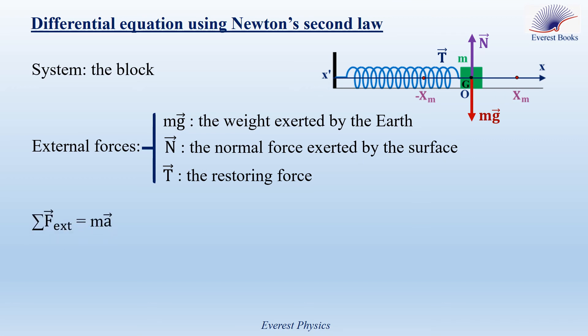Now, applying Newton's second law, the sum of the external forces acting on the block is equal to its mass times its acceleration. Replace the sum of the external forces by M g plus N plus T. Project these vectors along the x-axis. The projection of the weight is zero, since the weight is normal to the x-axis. Similarly, for that of the normal reaction, and the projection of the restoring force is equal to minus K x. So, minus K x equal M A.